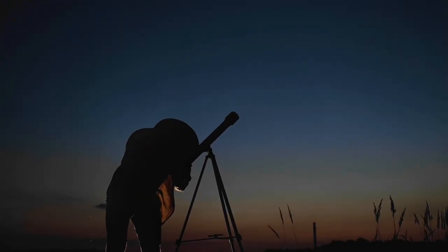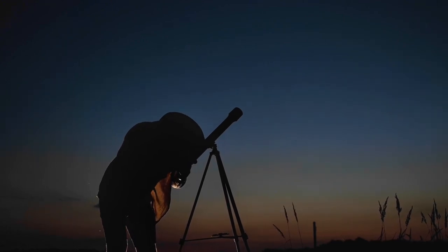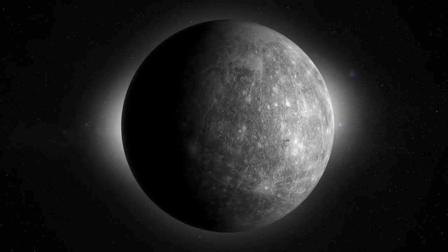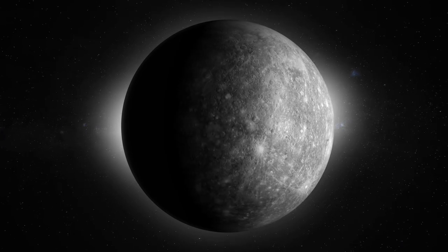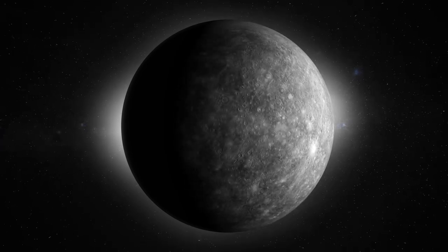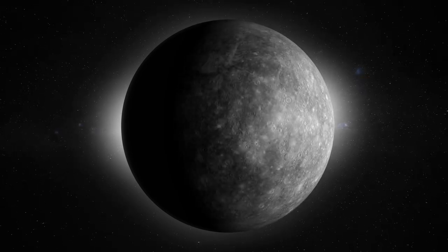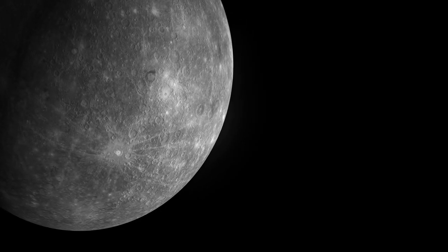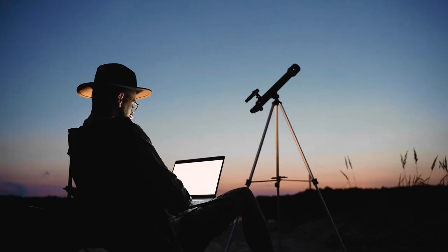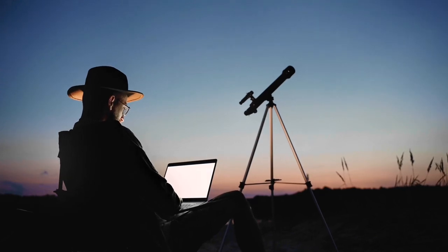You can only observe it for a few days each time it reaches its greatest separation from the Sun. This phenomenon repeats itself approximately once every three to four months and occurs alternately during the morning or afternoon, depending on whether Mercury is to the east or west of the Sun. Look for the planet low in the western sky just after sunset.